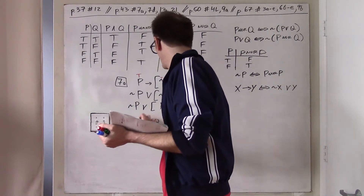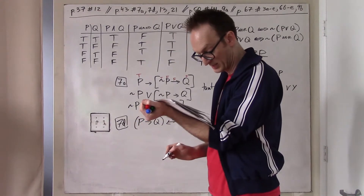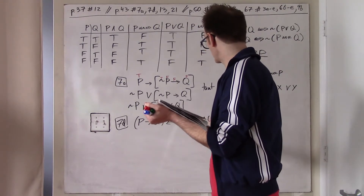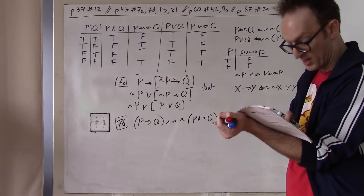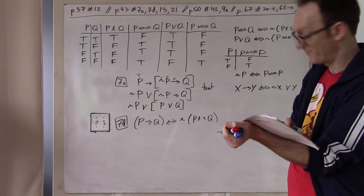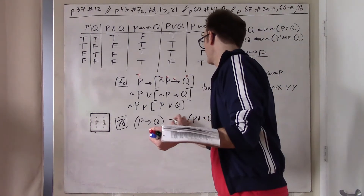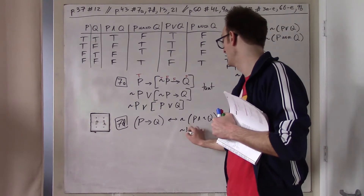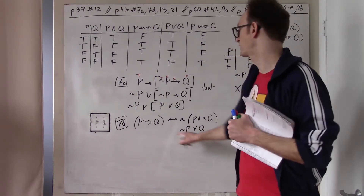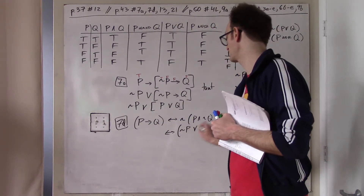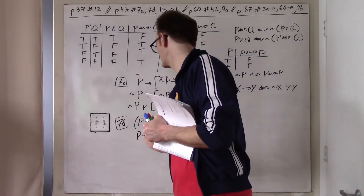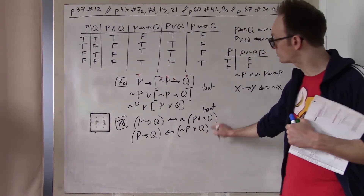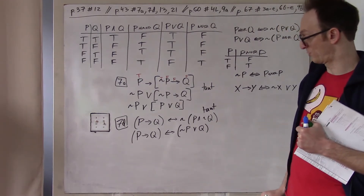Problem 7D: P → Q if and only if NOT P AND NOT Q. Is this a tautology? Well, I'm tempted to distribute this through. When I do that, I get NOT P OR Q, which is logically equivalent to P → Q. Since these are logically equivalent by DeMorgan's laws, I'll declare this a tautology.